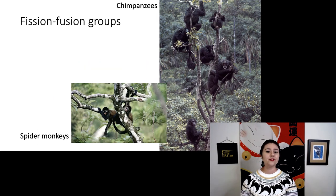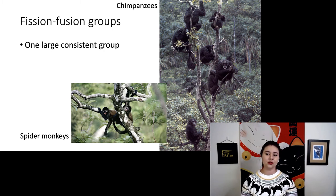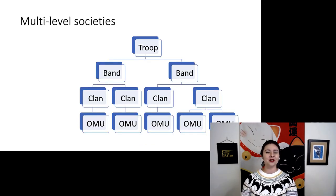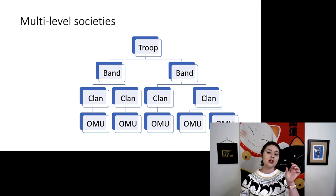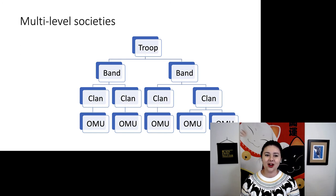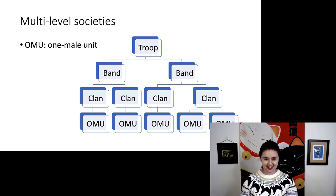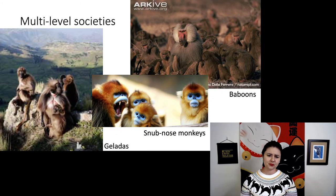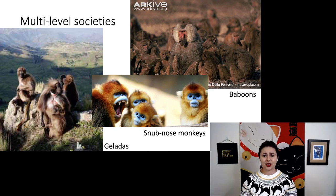We can also see fission-fusion groups, which are a special case of polygynandry. Chimpanzees and spider monkeys have one large consistent group, but their subgroups are constantly changing. In a couple of species, we have something called a multi-level society. At the top we have a troop, with individual bands within that. Within a band we have a clan, and within clans we might have multiple OMUs, or one-male units. These multi-level societies have really complex interactions, and we see them in baboons, geladas, and snub-nosed monkeys.